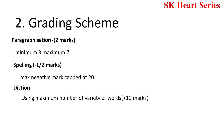Next is diction, which is a very important part in essay writing for Wipro. Using a maximum variety of unique words increases your diction score, and you can gain up to plus 10 marks. For example, if your essay is 300 words and 200 of those words are unique, your diction is good. But if your essay is 300 words and only 100 words are unique, then your diction is low.